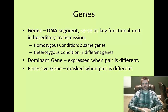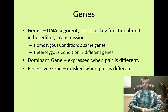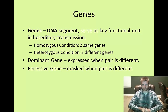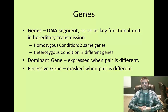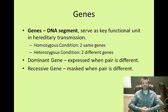Genes are your DNA segments and they serve as the key functional unit in hereditary transmission. You have two types of gene pairs: a homozygous condition, which is when you have two of the same genes, and a heterozygous condition, when you have two different genes. A dominant gene is going to be expressed when the pair is different, while the recessive gene is going to be masked when the pair is different.